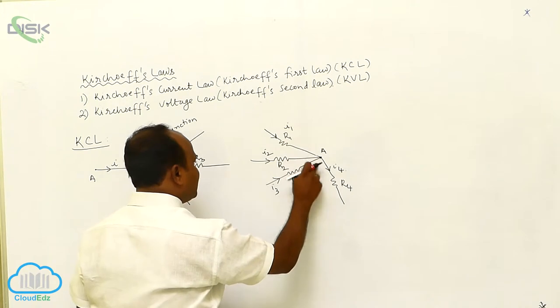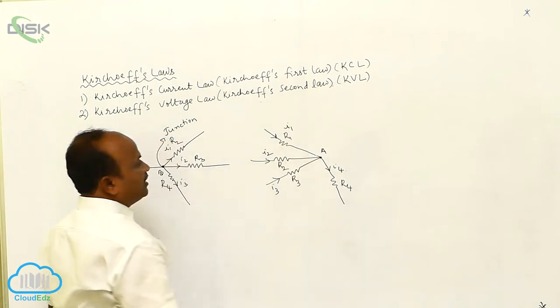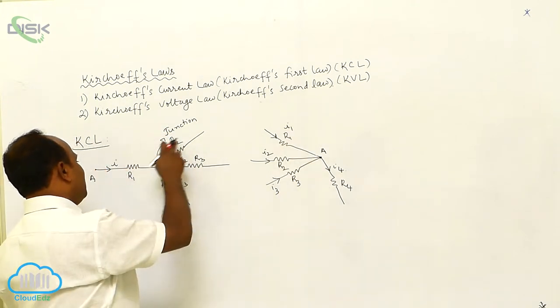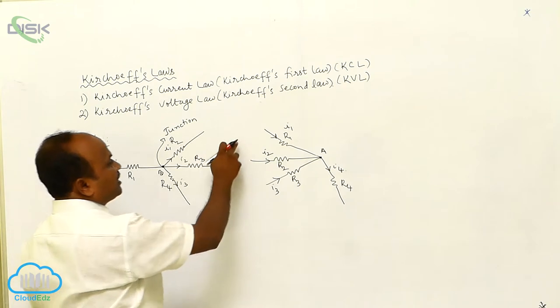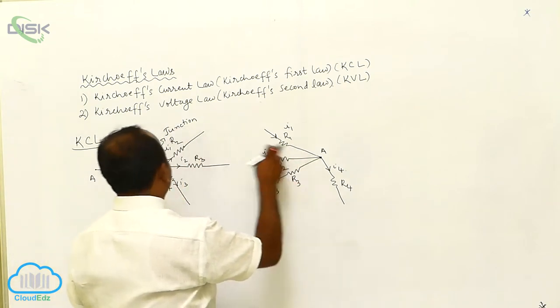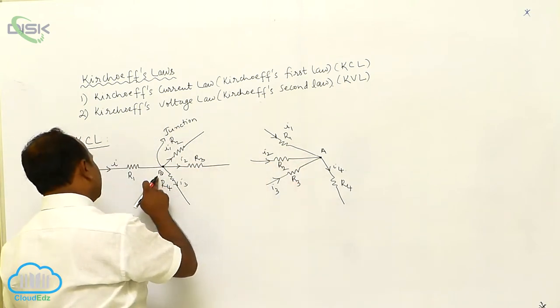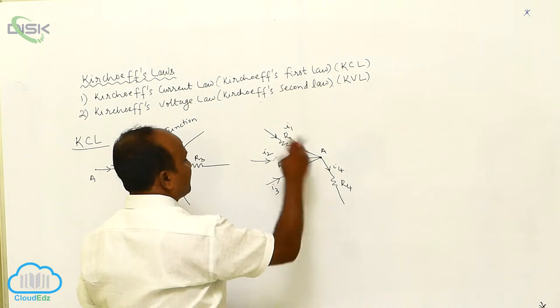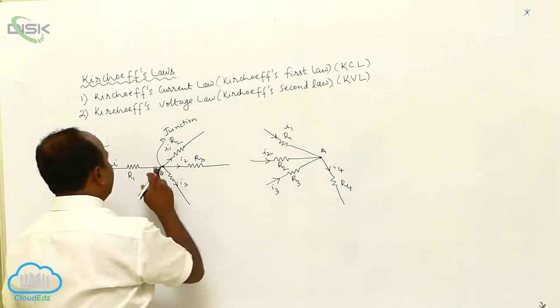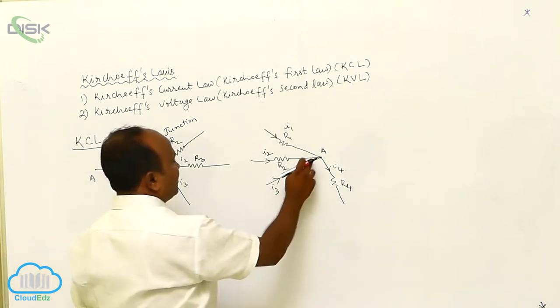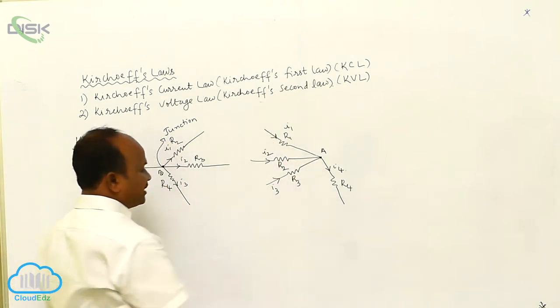This is also called a current junction. Here the currents are going to divide, and here the currents are going to combine. This is a junction, and this is a junction. Therefore, point B is a junction and point A is a junction.